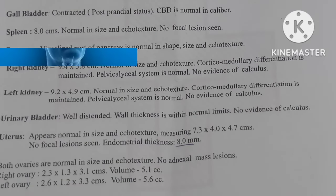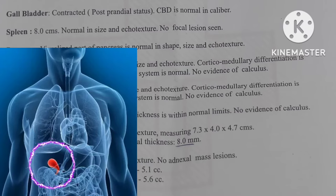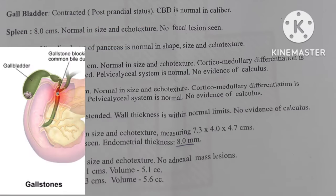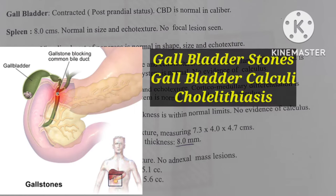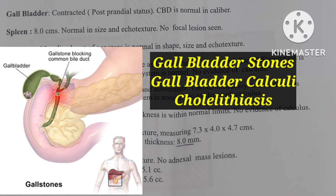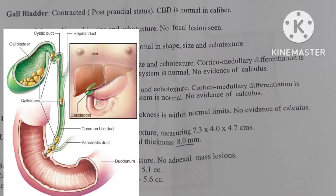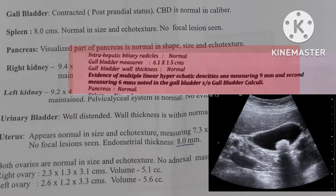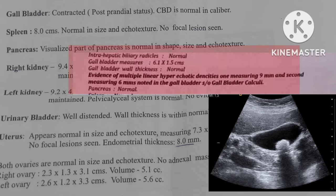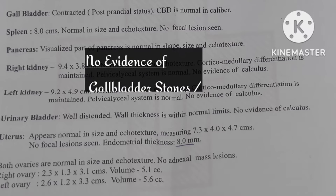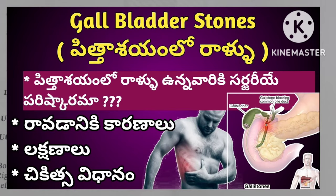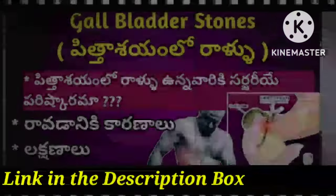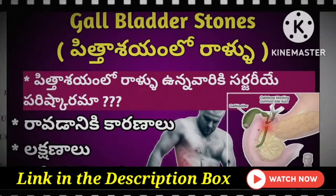Next is the gallbladder, an organ on the upper right side of the abdomen. If the size is normal, they mention 'gallbladder normal.' A common finding is gallbladder stones, medically called cholelithiasis or gallbladder calculi. On ultrasound, they appear as hyperechogenic densities. The report mentions whether stones are single or multiple and their size in mm. If no stones are present, they write 'no evidence of gallbladder calculi.'